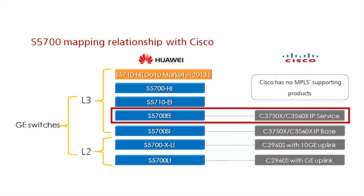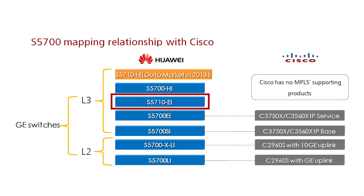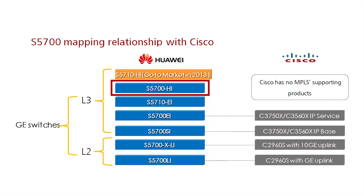Huawei also has two additional strong products in the market. The S5710 EI supports 8 10-gig uplink ports and also MPLS and NetStream. The S5700 HI supports hardware-based Ethernet OAM and BFD as well as MPLS and NetStream. Additionally, Huawei offers a fixed configuration 48-port S5710 HI with 48 gigabit Ethernet ports and 8 fixed 10 gigabit Ethernet ports.